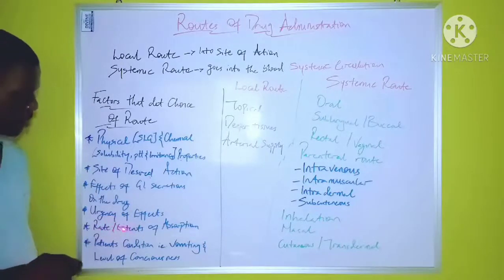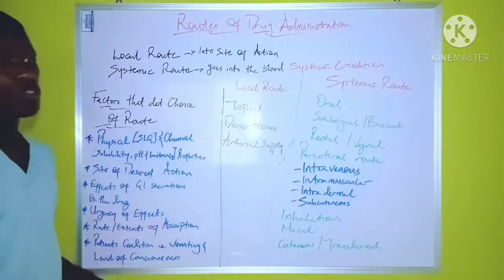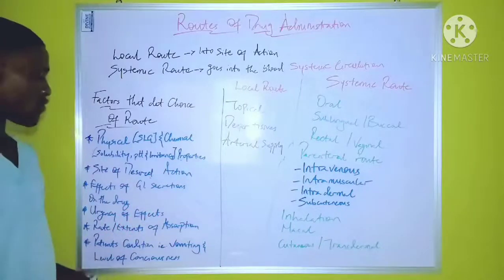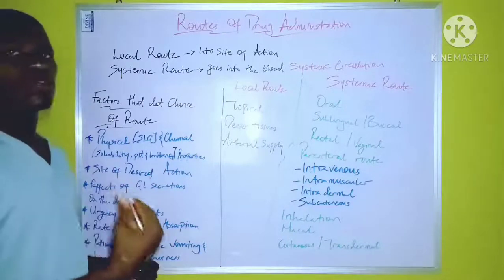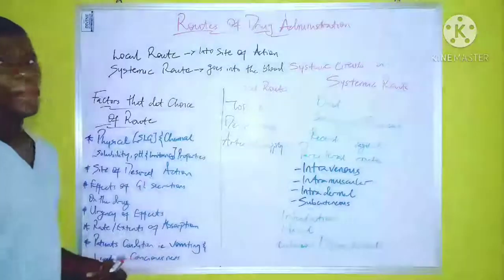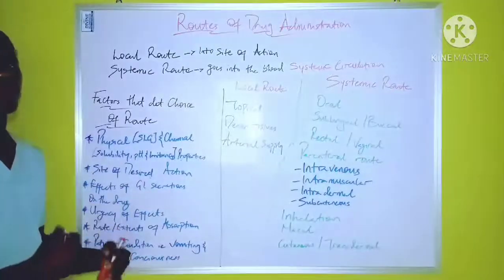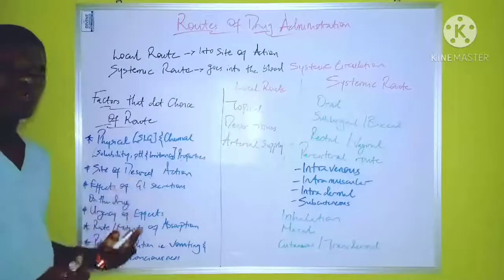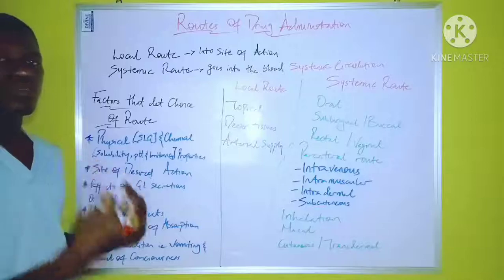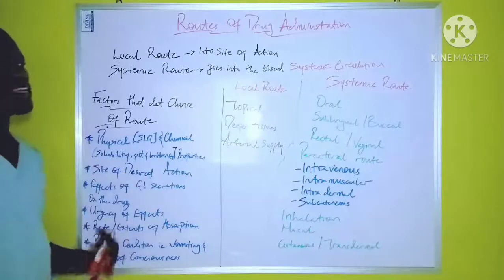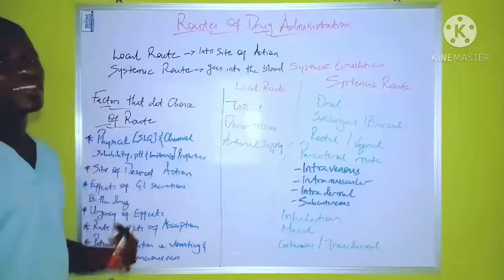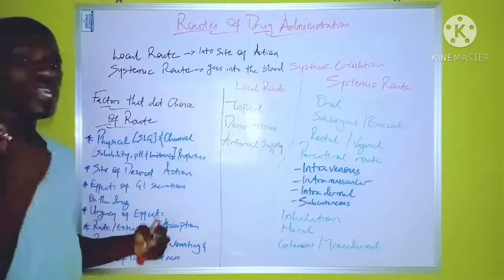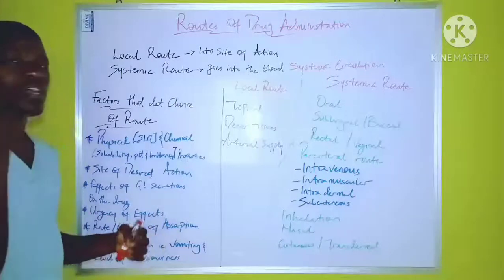The next factor is the rate or extent of absorption, which is still related to urgency of effect. If the drug is absorbed faster through the mouth, it is advisable to take it through the mouth. If it is not absorbed quickly enough, it is advisable that the drug is administered through any other routes.